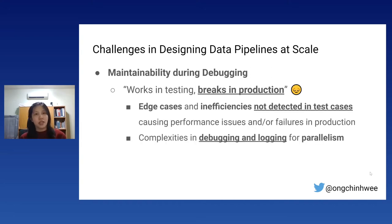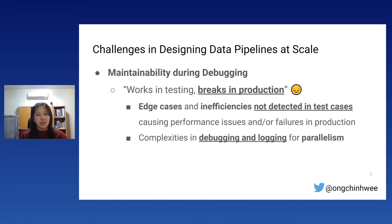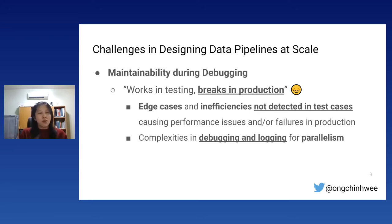The second challenge is maintainability during debugging — the classic scenario of 'works in testing, breaks in production.' While the code works in testing, we typically look at a subset of the data, and that subset may not be fully representative of actual production data. This leads to heavy edge cases and inefficiencies not detected in test cases, causing performance issues and failures in production.